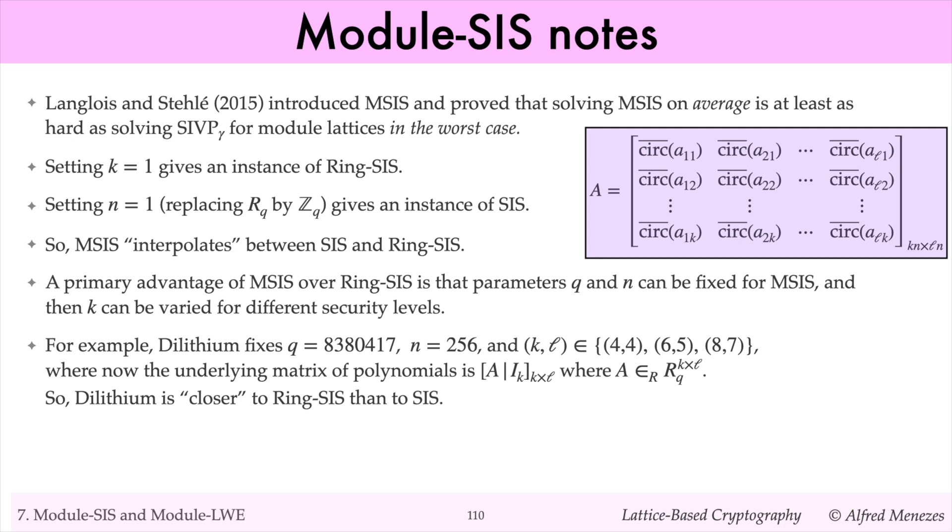where the underlying matrix of polynomials is in standard form, and where A is a k by L matrix of polynomials. Since k is relatively small compared to n, module SIS instances in Dilithium are closer to ring SIS than to SIS. Finally, I'll mention that since 2n divides q minus 1, the number theoretic transform can be used for fast polynomial multiplication.